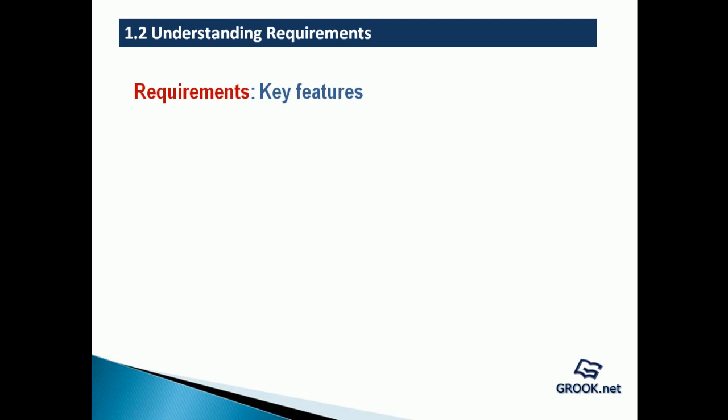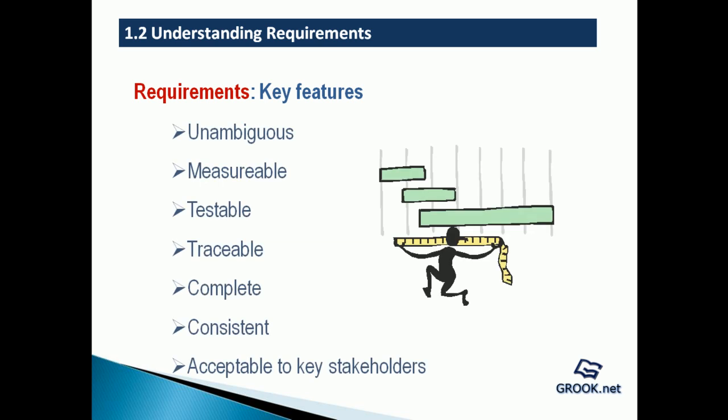A well-defined requirement should be unambiguous — that is, it should be very clear. It should be measurable, testable, and traceable in terms of its origin to the objective. It should be complete and consistent, and most importantly, acceptable to all the key stakeholders.